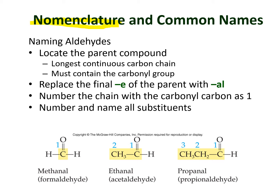According to the IUPAC system for naming aldehydes, general IUPAC rules apply. First, locate the parent compound — the longest continuous carbon chain — which must include the carbonyl group (C double bonded with O and H). Then replace the terminal 'e' of the alkane name with 'al'. Number the chain so that the carbonyl carbon is always carbon number one.